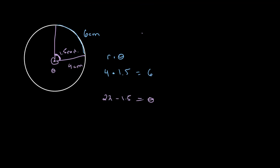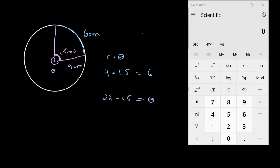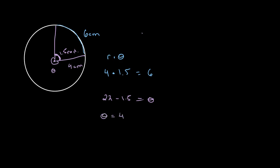This ends up being—let's plug it in—2 times 3.14159 equals 6.28, then minus 1.5, and we get 4.78318. So theta equals 4.73.